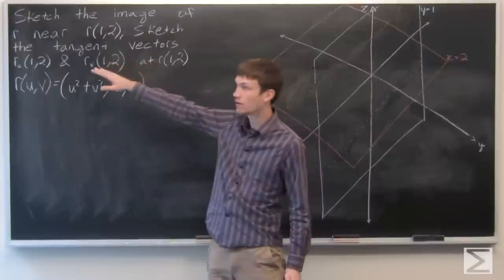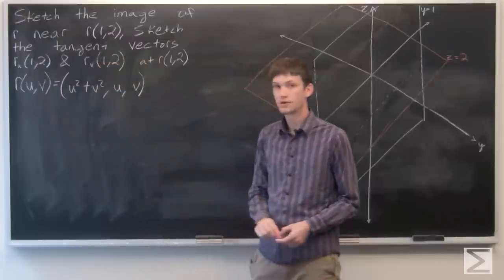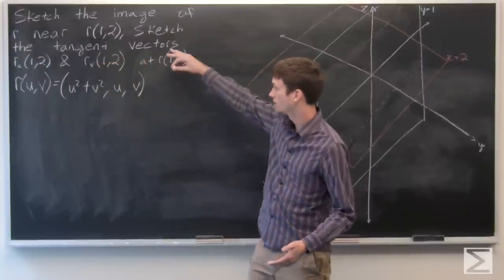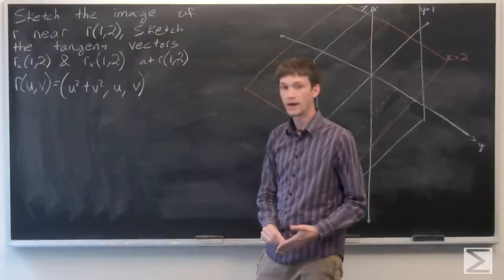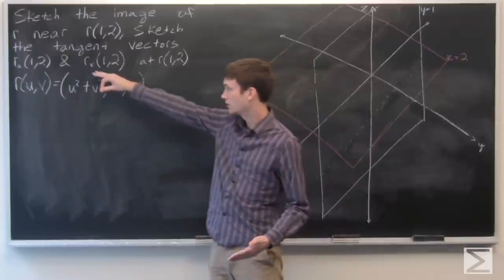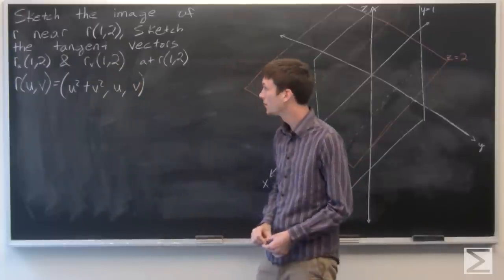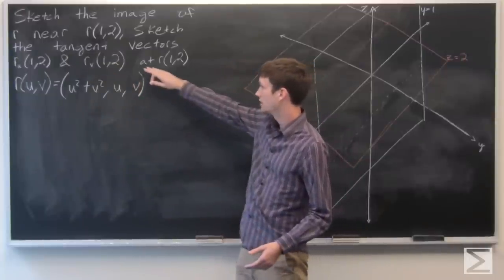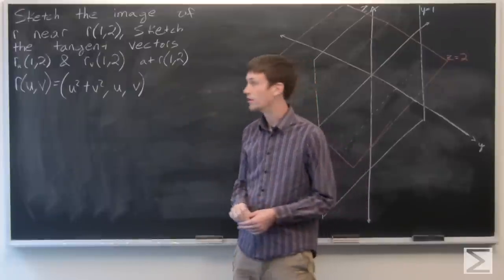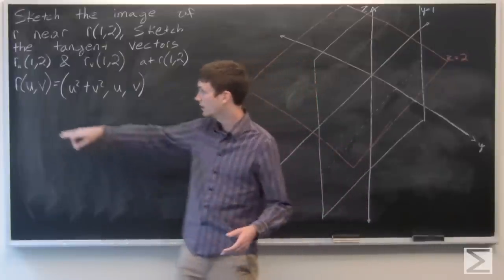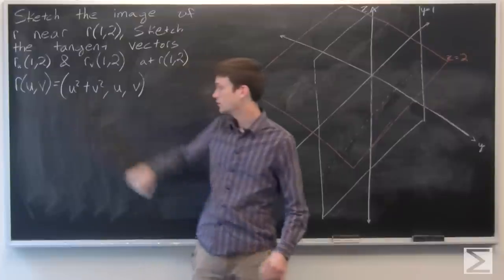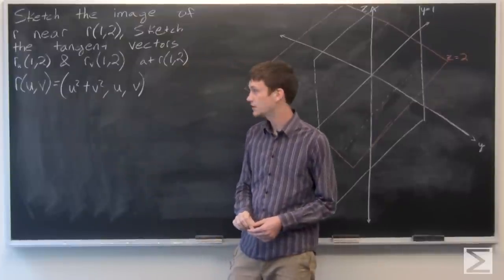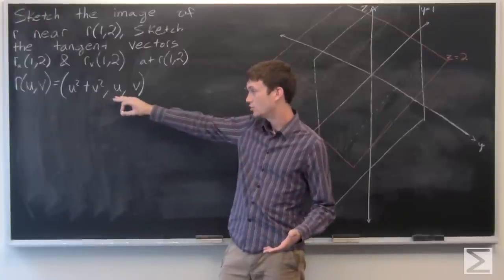In this problem we're asked to sketch the image of r near r(1,2), and we want to sketch the tangent vectors r sub u at (1,2) and r sub v at (1,2), and we want it to be translated to the point r(1,2). We're given r(u,v) equals u squared plus v squared, u, v.